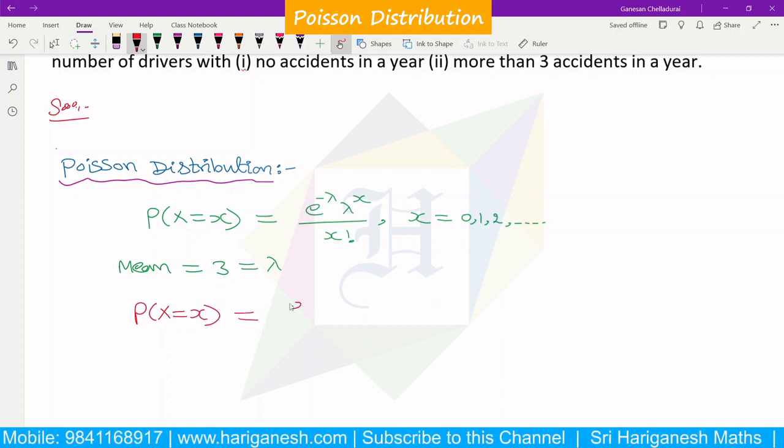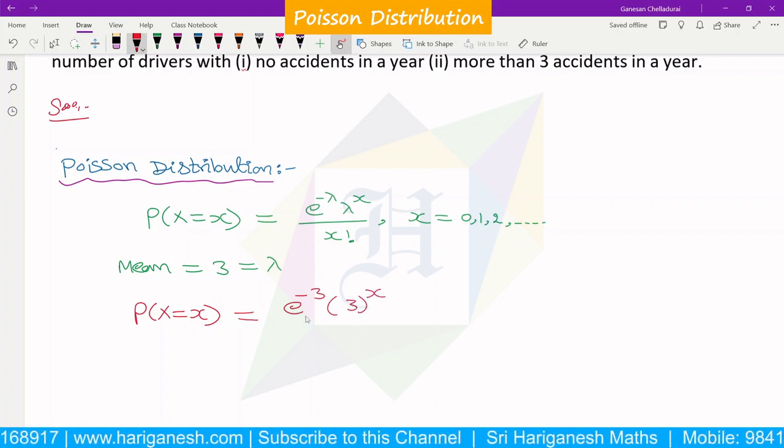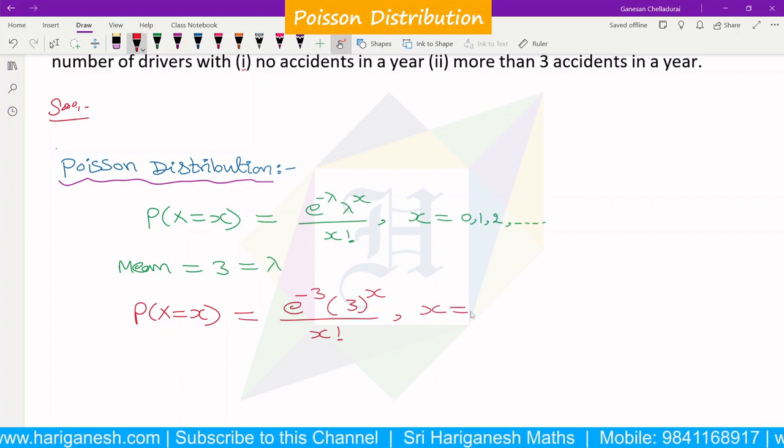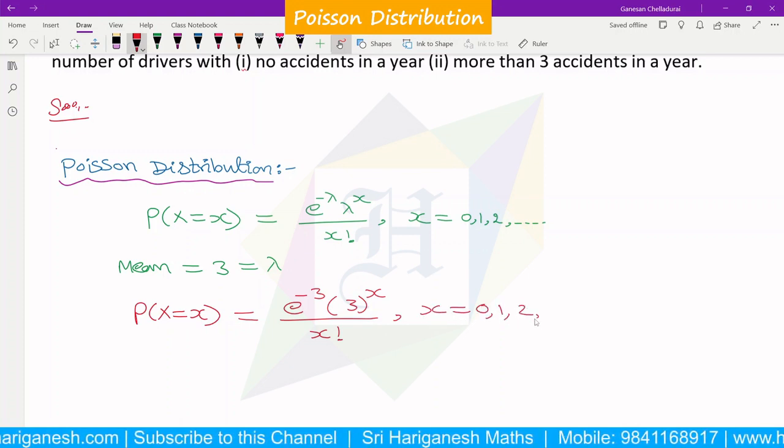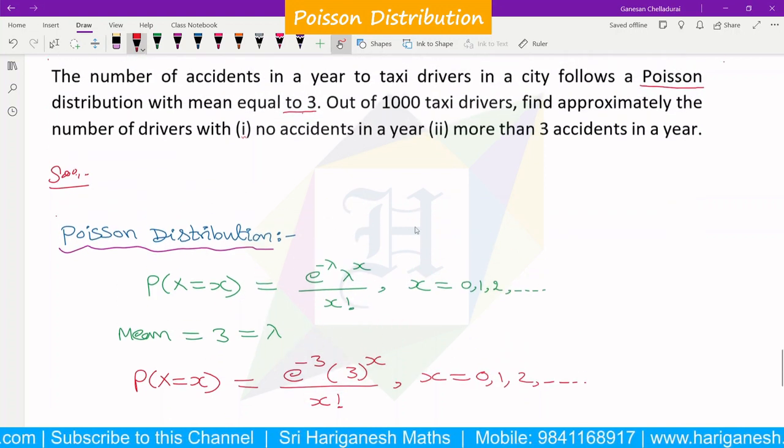So lambda equals 3, P(X=x) = e^(-3) × 3^x / x factorial. So x takes values 0, 1, 2, etc. This is the probability mass function.